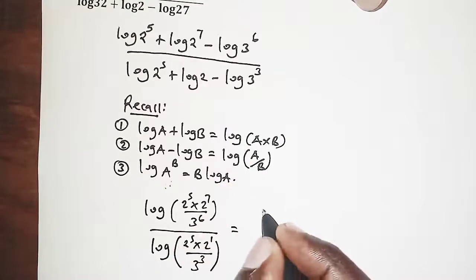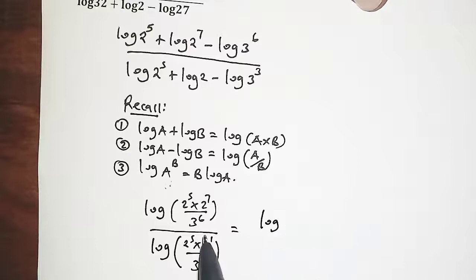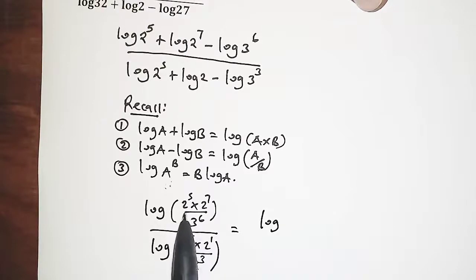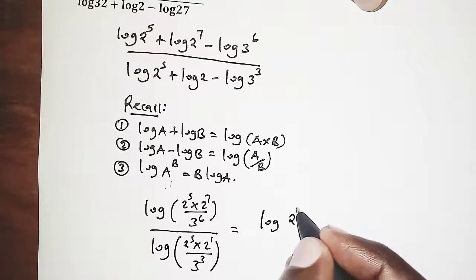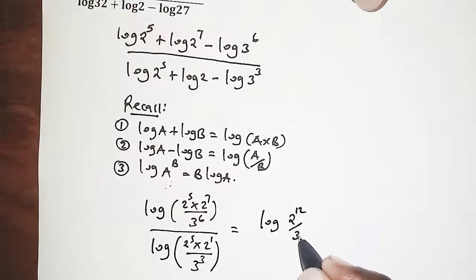Simplifying this on the numerator, applying the laws of indices, 2 power 5 times 2 power 7, we add the powers. So that is 2 power 12 and the denominator is 3 power 6.